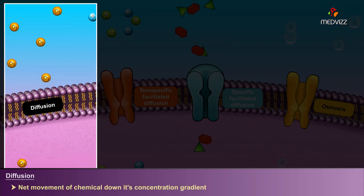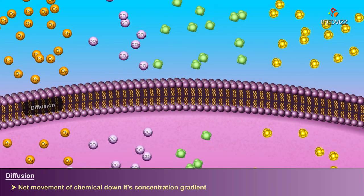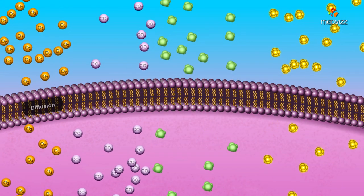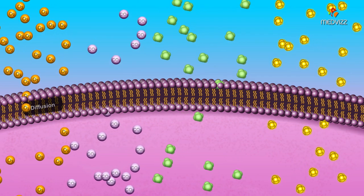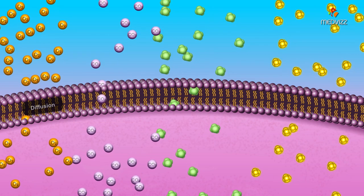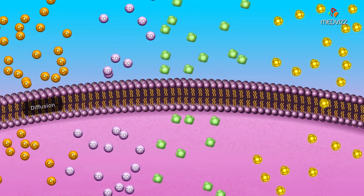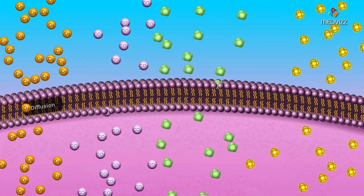Diffusion is the net movement of a chemical down its concentration gradient, that is, from an area of high concentration to an area of lower concentration. This diffusion requires no energy expenditure by the cell, as the concentration gradient drives the diffusion.